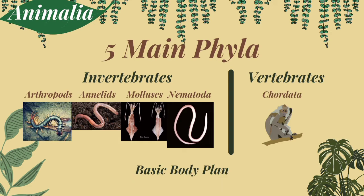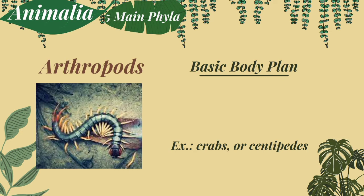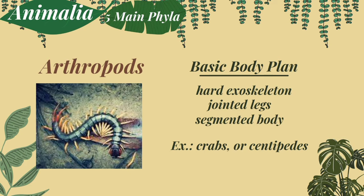The first phylum is arthropods. All arthropods have a hard exoskeleton made up of chitin, have jointed legs, and a segmented body with three distinct segments: the head, thorax, and abdomen. Examples of arthropods are crabs and centipedes.